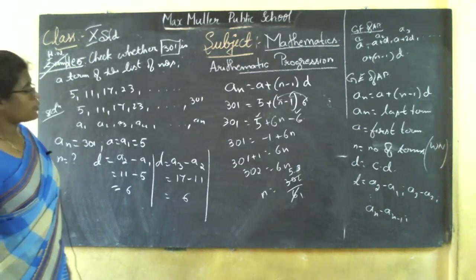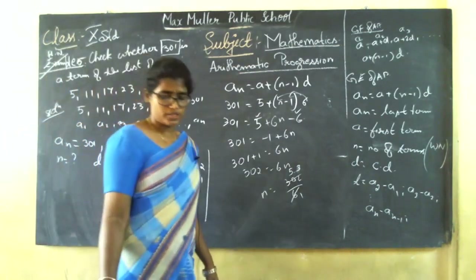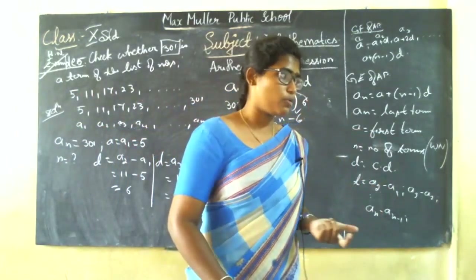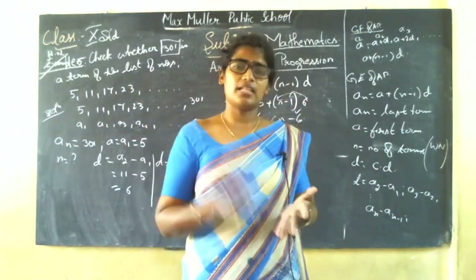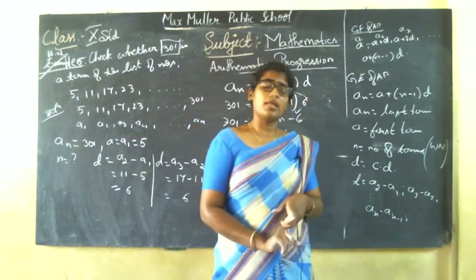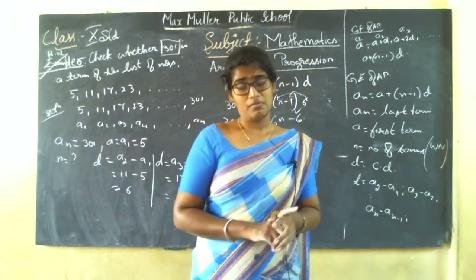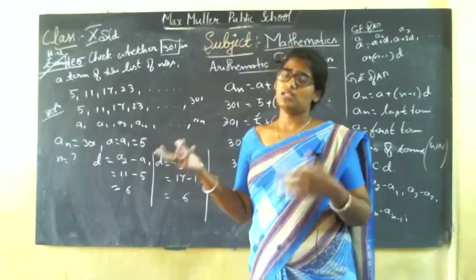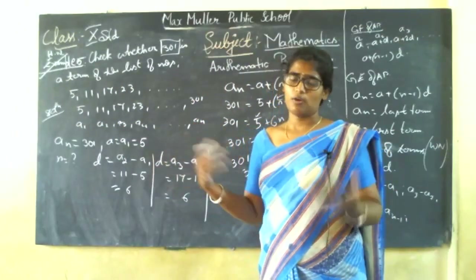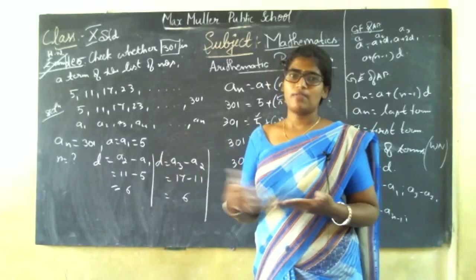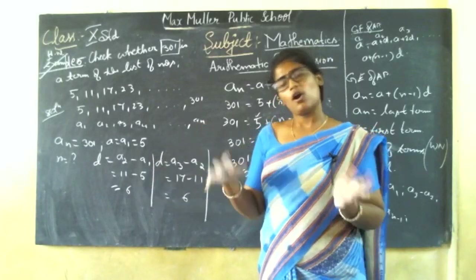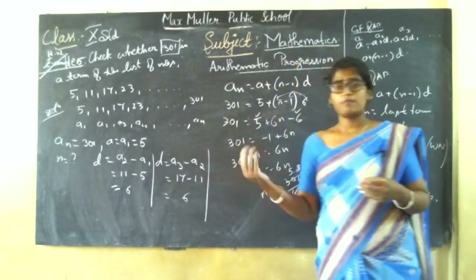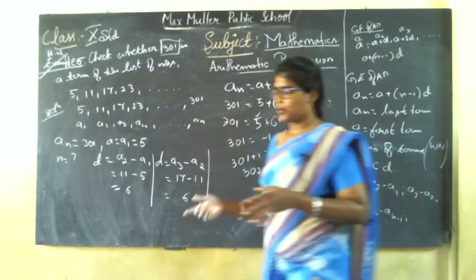In today's class you have studied two types of questions. The first type: when the an value is given but n value is not — you find n. The second type: when terms like the 11th and 16th are given in words or notation, you write them in general form and use elimination to find the AP or any required term. I hope these two types of sums are clear. Thank you very much, have a good day.